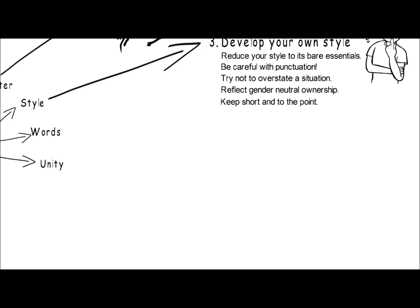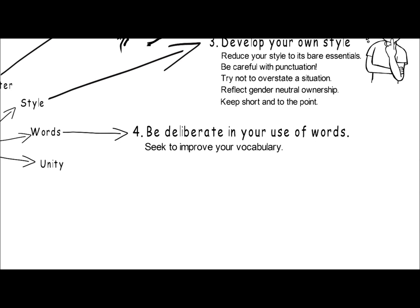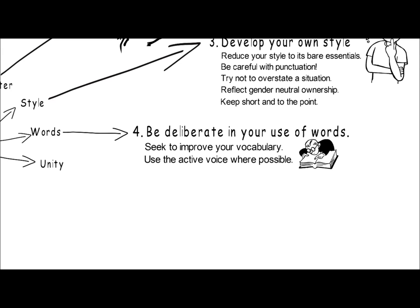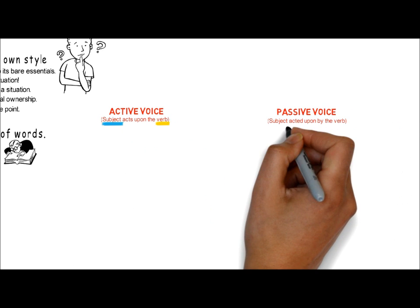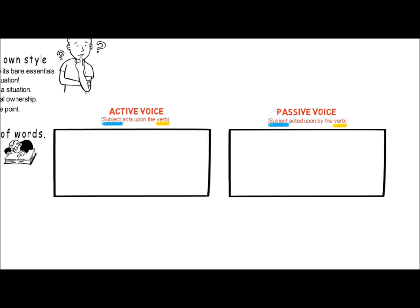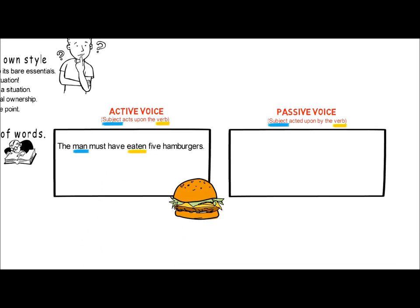The fourth principle is your use of words. Be deliberate in your use of words. Actively seek to improve your vocabulary and choice of words by reading, and by using a dictionary and a thesaurus. Think about how you arrange your sentences. Use active verbs wherever possible over passive verbs. An active verb, or the active voice, has the subject acting upon the verb. In contrast, the passive verb, or passive voice, has the subject being acted upon by the verb. For example: 'The man must have eaten five hamburgers' — here it is the man who is doing the eating, a good example of the active voice. 'Five hamburgers must have been eaten by the man' — here the hamburgers are being acted upon by the verb, a good example of the passive voice. Try to put the subject performing the verb up front; it is much clearer and a much more powerful way of writing.